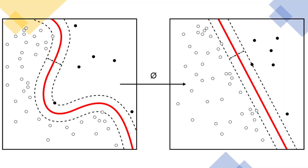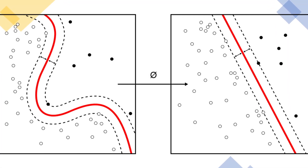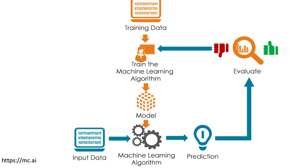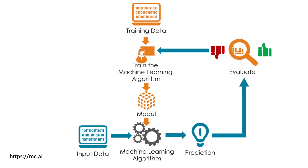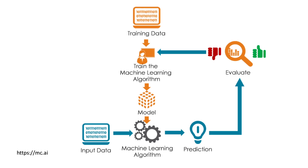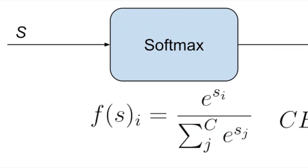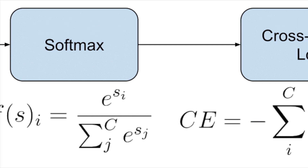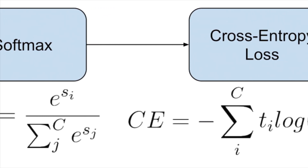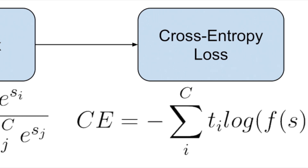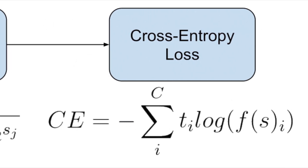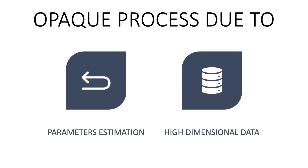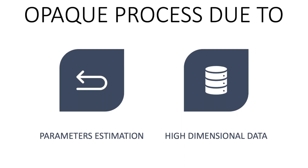For instance, interpreting how specific data points affect machine learning classification methods is often unclear. Such classifiers must go through a training process before being able to correctly separate new data points into the correct classes. During this training, the operational parameters of the model are configured while minimizing a cost function, determining the adjustment on the decision logic. Once trained, the model can be fed with new unseen data points, which will be associated to the correct class with a certain probability. The complex process of estimating the values of different parameters, as well as the high dimensionality of the data, results in machine learning being an opaque process.